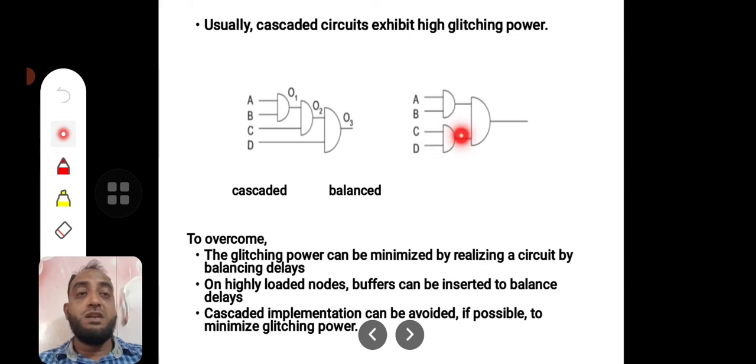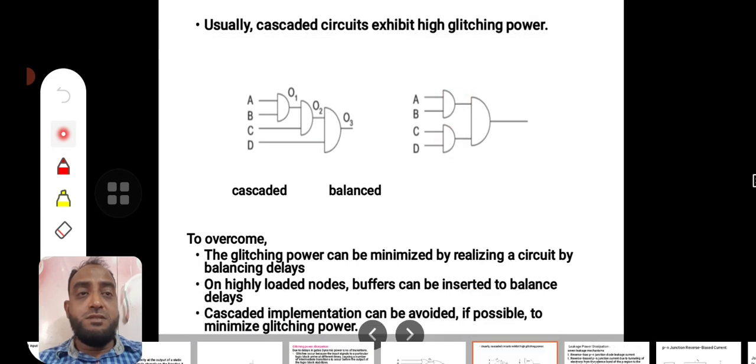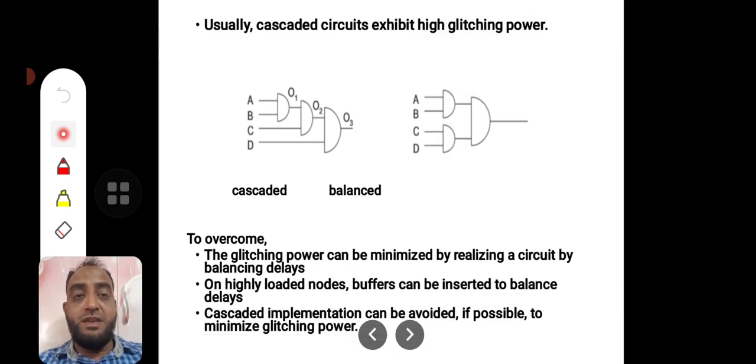The difference between the cascaded circuit and balanced circuit is: in cascaded circuits, many transitions may take place, whereas in balanced circuits, the number of transitions is lower than the previous case.